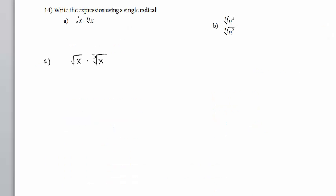In Part A, we have the square root of x times the cube root of x. In order to write the expression using a single radical, we will convert each radical to the form having a fractional or rational exponent. The square root of x is x to the 1 half power. The cube root of x is x to the 1 third power.